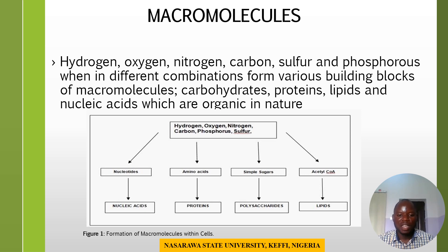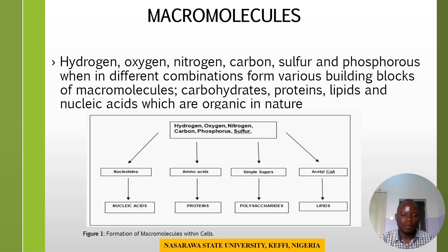As you can see in this chart, hydrogen, oxygen, nitrogen, carbon, phosphorus, and sulfur come together to form nucleotides, amino acids, simple sugars, and acetyl-CoA. The aggregation of these eventually leads to the formation of the macromolecules.